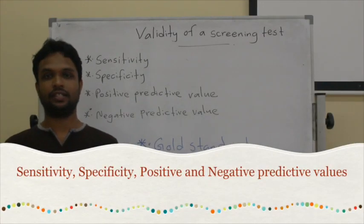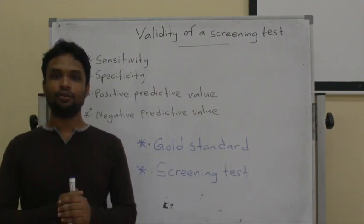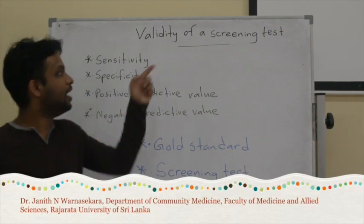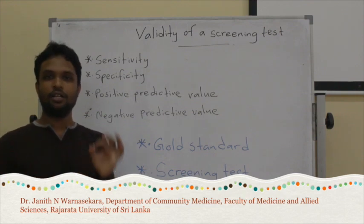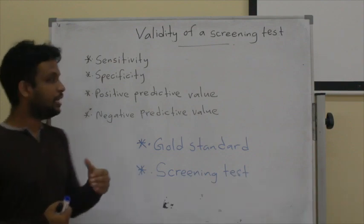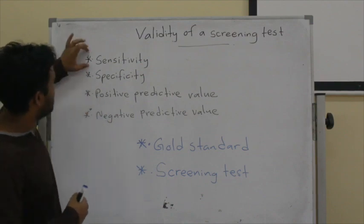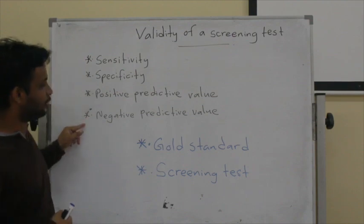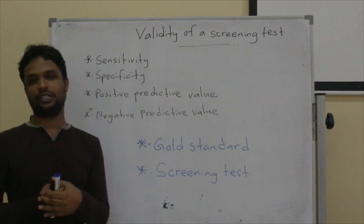Welcome to the Epidemiology Lecture Series. This is the third mini lecture of the Screening Lecture Series. Today we are going to talk about the different methods available to assess the validity of a screening test. There are several methods we can apply, and here we are going to talk about four main methods: sensitivity, specificity, positive predictive value, and negative predictive value.